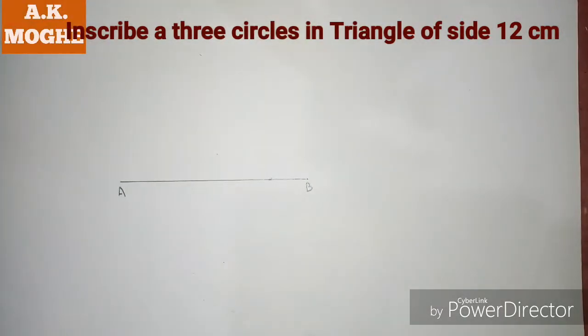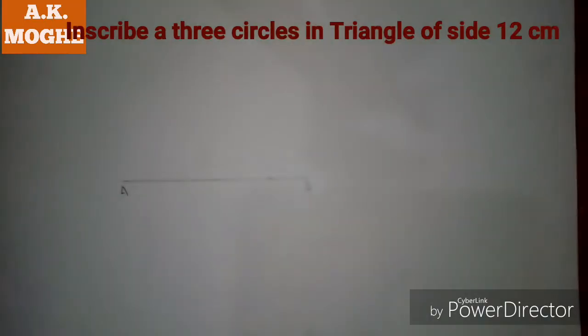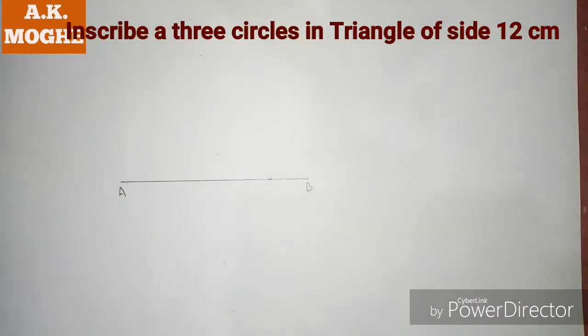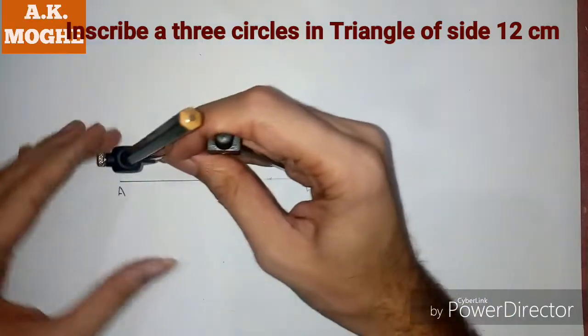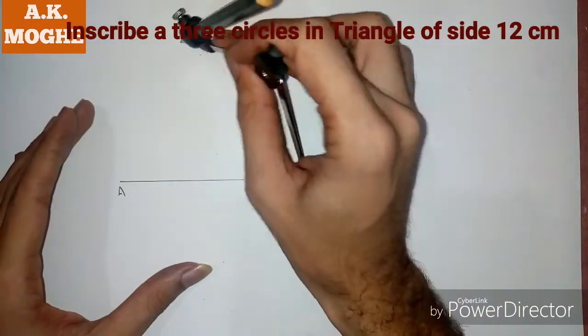Hello guys, welcome to the fifth lesson of intermediate geometry class. Here we are drawing three circles in a triangle. For that, we have to draw one line of 12 centimeter, then we will draw an equilateral triangle as AB.